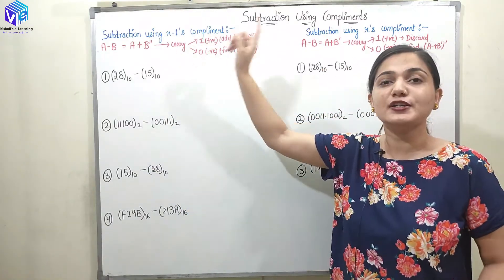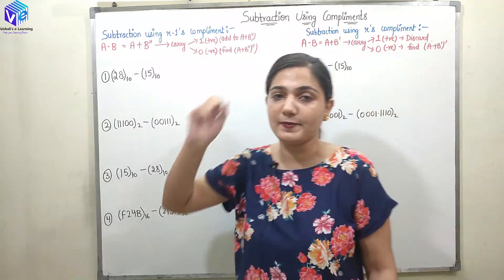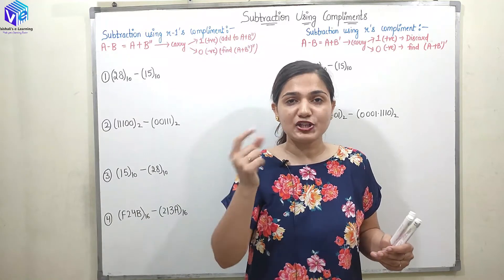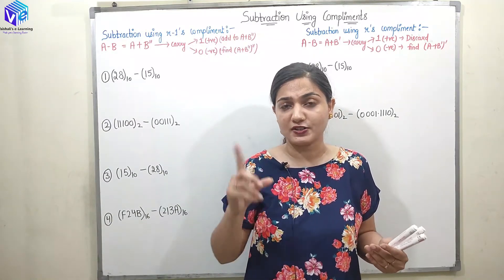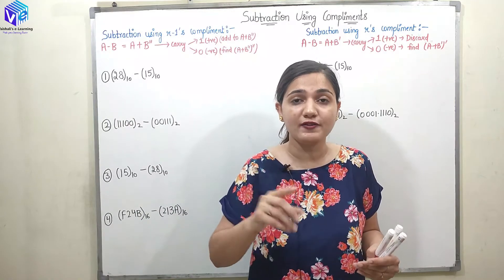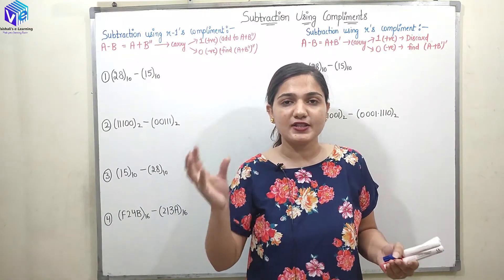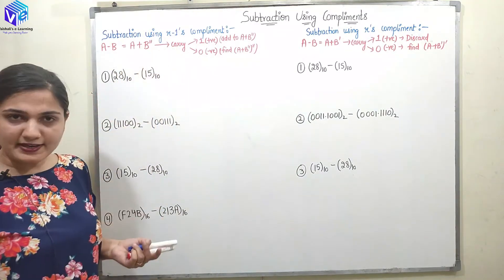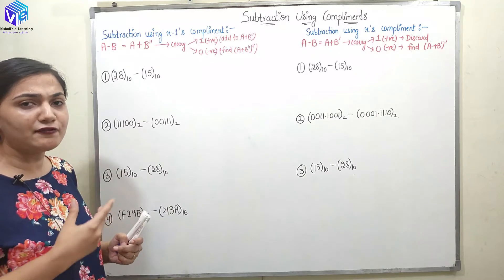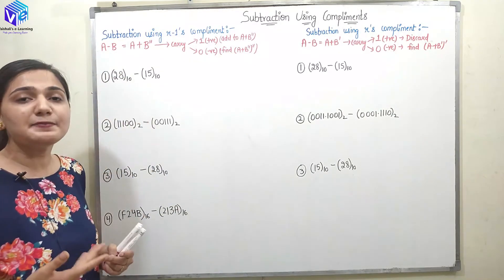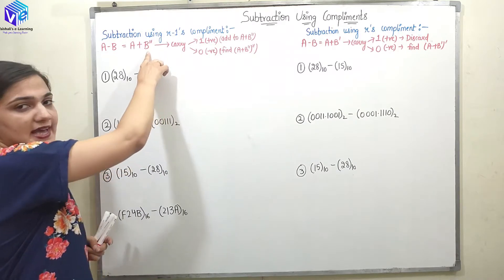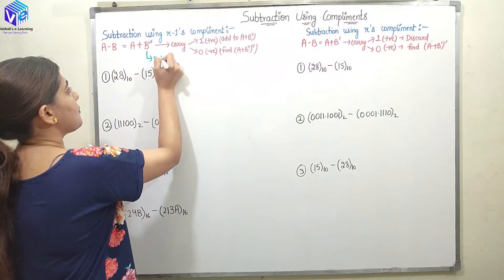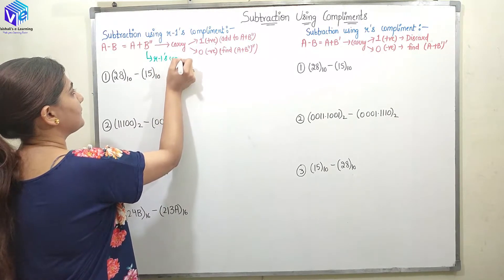Let's start our discussion with the subtraction using R-1's complement. I will be telling you how we will be using the addition operations or the adders to find out the subtraction. There is no need of subtractors — we will be just using the adders to find out the subtractions. So, we are using the R-1's complement and if I have to find out A minus B, it can be represented as A plus B double dash. B double dash represents the R-1's complement.